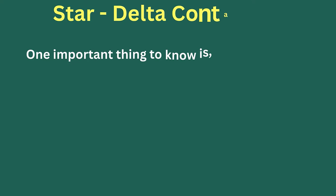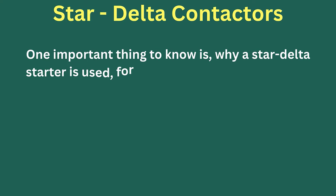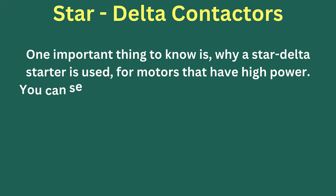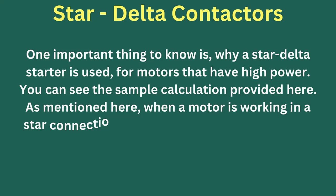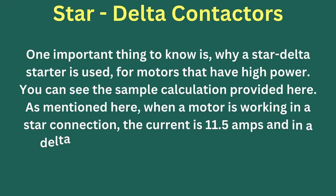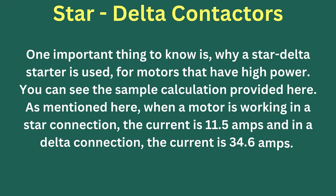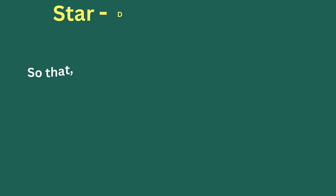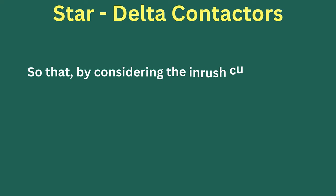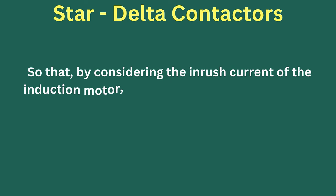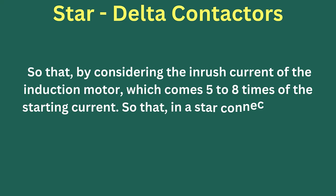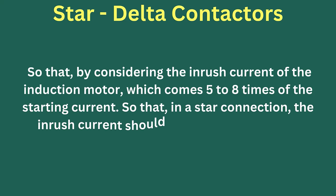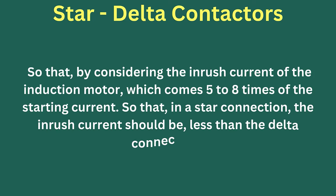One important thing to understand is why a star-delta starter is used for high-power motors. As shown in the sample calculation, when a motor runs in star connection the current is 11.5 amps, and in delta connection it is 34.6 amps. Considering that the inrush current of an induction motor is five to eight times the starting current, the inrush current in star connection is significantly less than in delta connection.